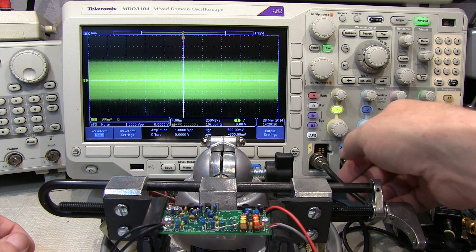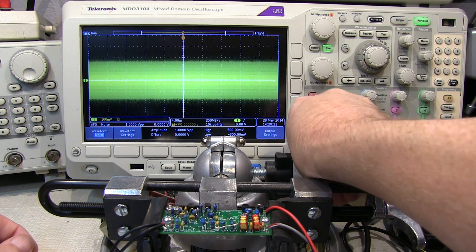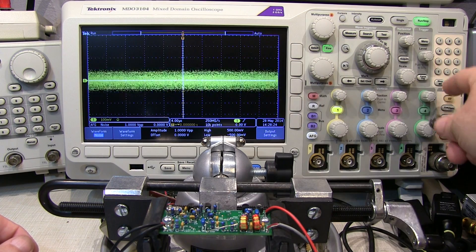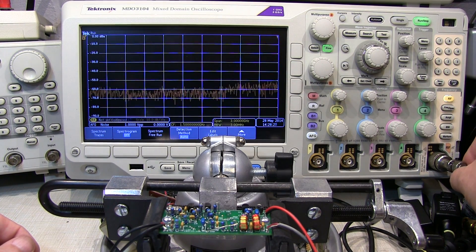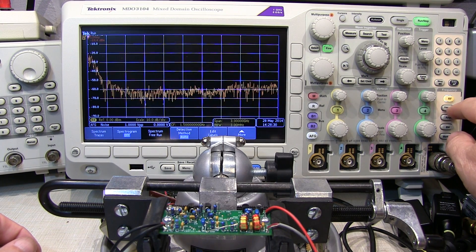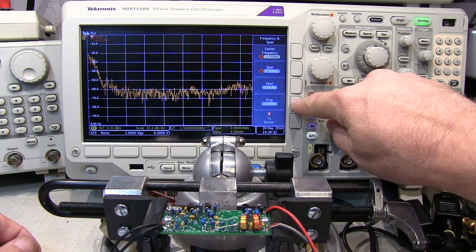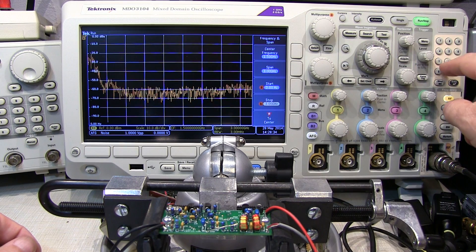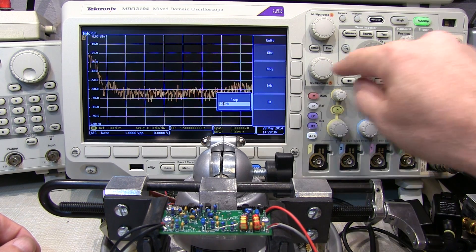In fact, instead of looking at it in the time domain here, let's look at it in the frequency domain on the spectrum analyzer. I'll turn the spectrum analyzer on and put our signal in. And let's just adjust, we'll start at 9 kHz, let's stop at 50 MHz here.